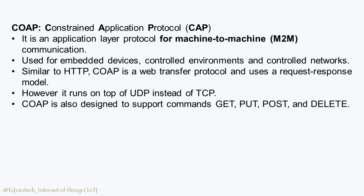CoAP — Constrained Application Protocol — is an application layer protocol for machine-to-machine (M2M) communication, where applications are meant for small embedded devices, controlled environments, and controlled networks. Similar to HTTP, it is a web transfer protocol and uses a request-response model. However, it runs on top of UDP instead of TCP, and is also designed to support commands like HTTP.